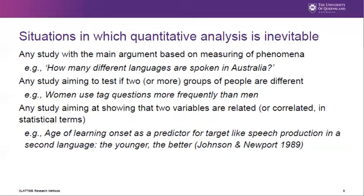Studies that aim at proving that two or more groups of people are different would also employ quantitative research methods. For instance, we could be interested in looking at whether women use tag questions such as 'isn't it' or 'aren't you' more frequently than men. And lastly, any study aiming at showing that two variables are related — or in statistical terms, correlated — would also be addressed using a quantitative design. For example, we may investigate whether age and success in second language acquisition are correlated, with the assumption that the younger someone starts acquiring a second language, the better the outcome will be.